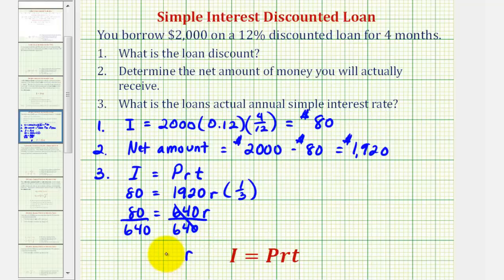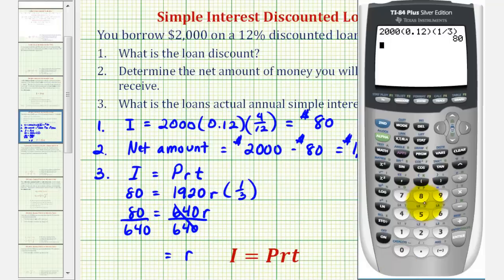So we have R equals this quotient, so we'll go back to the calculator. 80 divided by 640 is equal to 0.125.